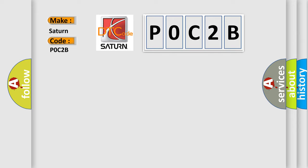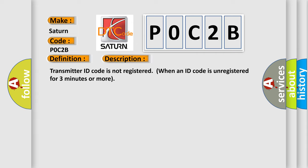The basic definition is Transmitter ID not registered. And now this is a short description of this DTC code: Transmitter ID code is not registered when an ID code is unregistered for three minutes or more.